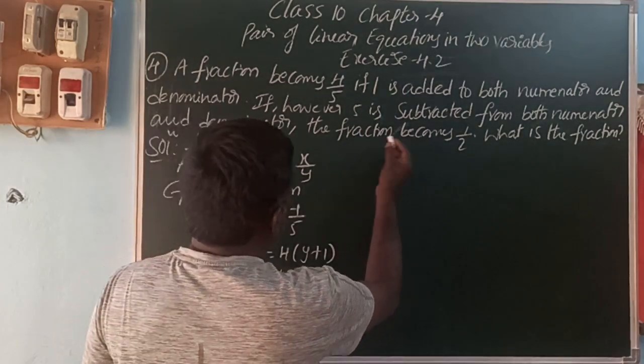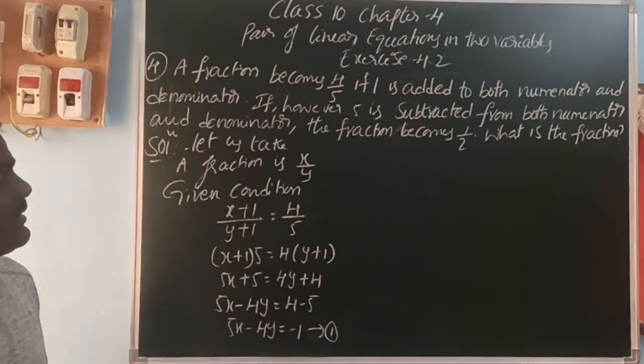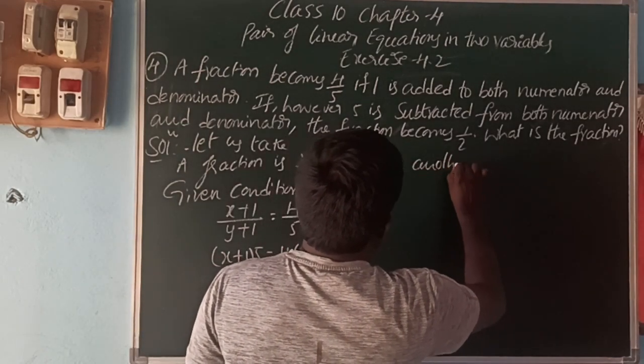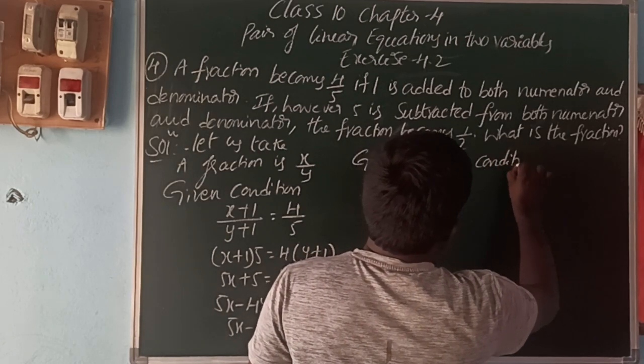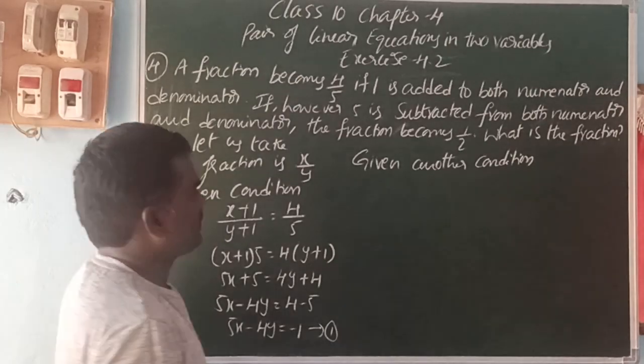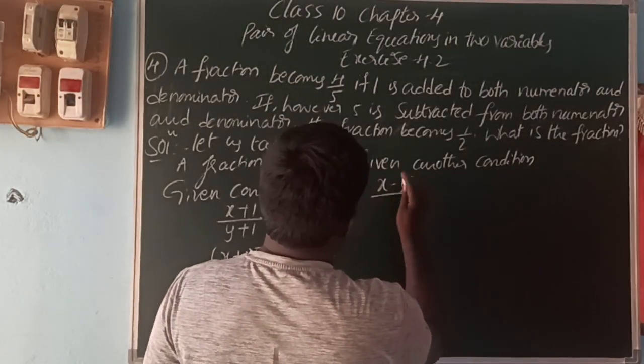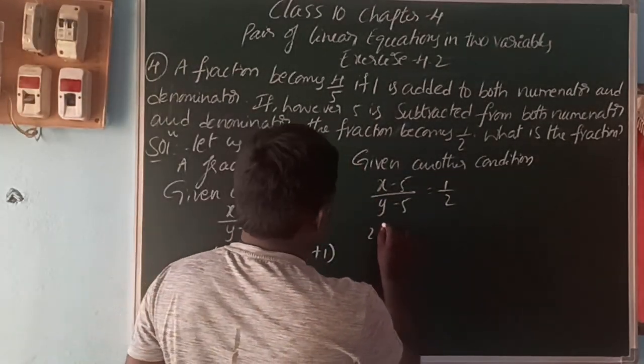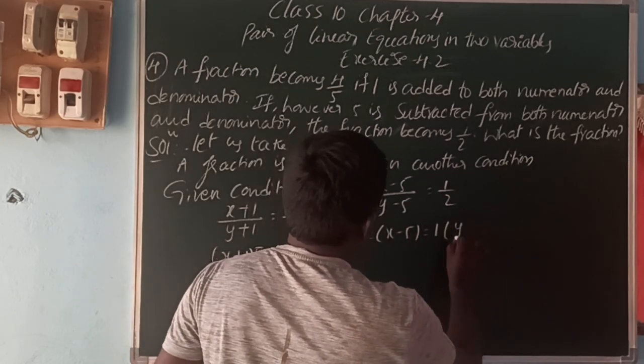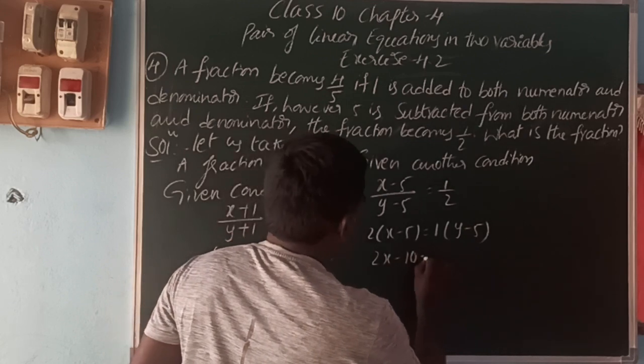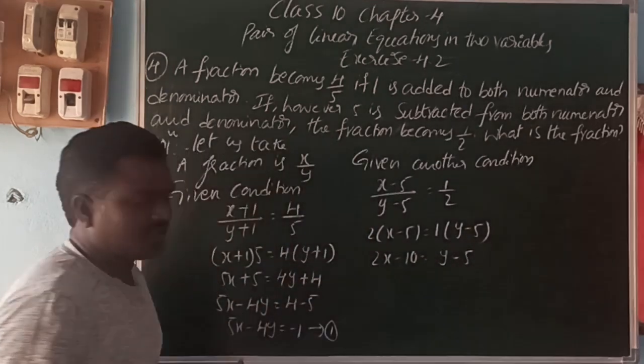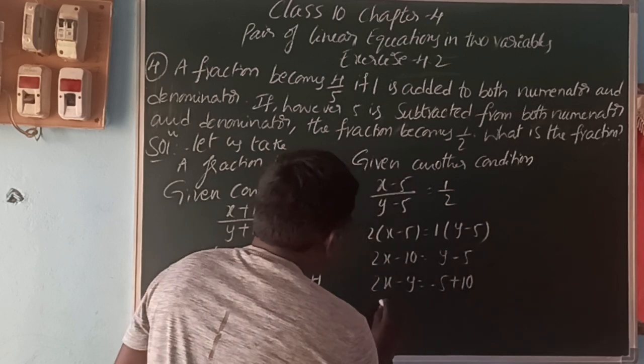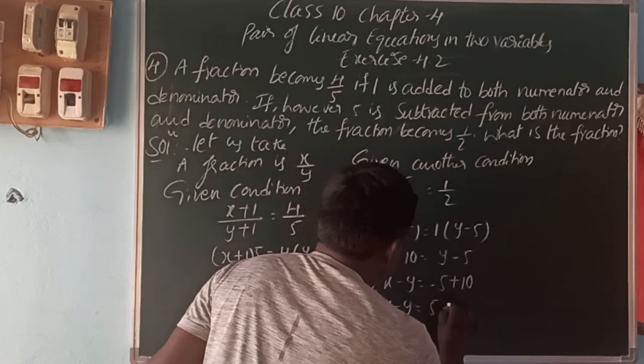Next, given another condition, 5 is subtracted from both numerator and denominator, the fraction becomes 1 by 2. So, given another condition, 5 is subtracted from both numerator and denominator, that is x minus 5, y minus 5 is equal to 1 by 2. So, 2 divided cross multiply, so 2 of x minus 5 is equal to 1 of y minus 5. So, 2x minus 10 is equal to y minus 5. Take the variables one side, constants one side, so 2x minus y is equal to minus 5 plus 10. So, 2x minus y is equal to 5. This is equation 2.